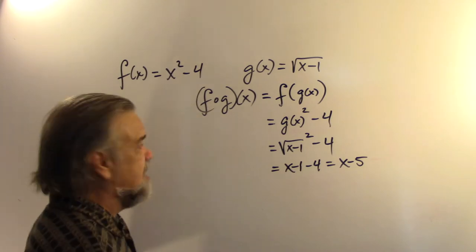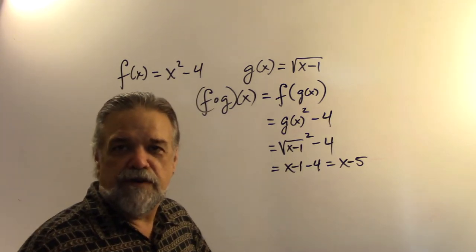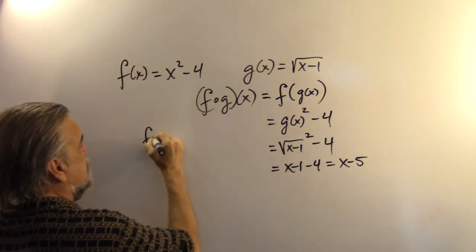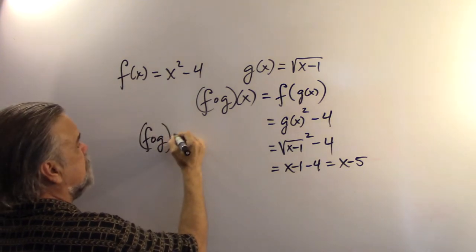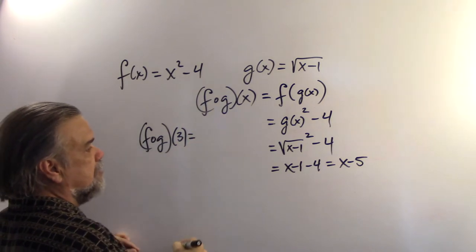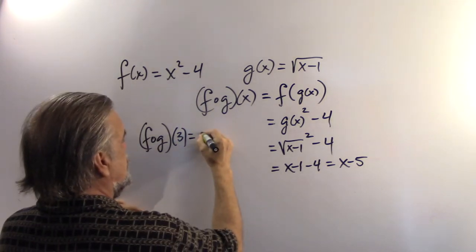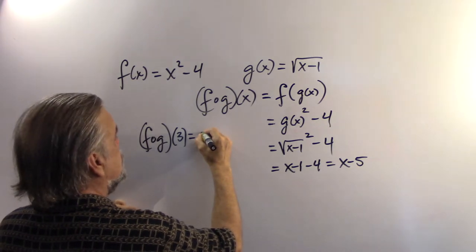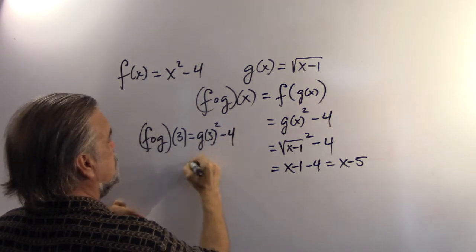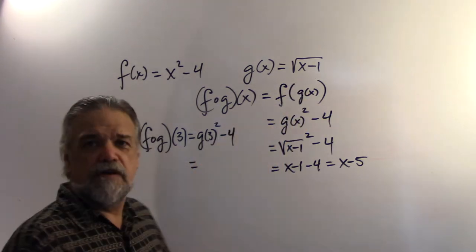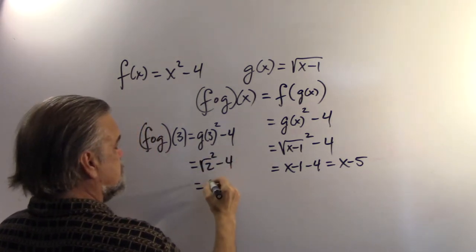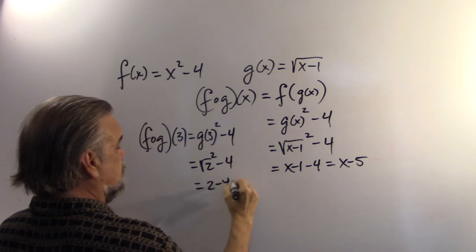Well, let's see. Let's plug in some values. Let's evaluate the function for different values of x. Let's say f of g of 3. Well, that's going to be g of 3 squared minus 4. And g of 3 is square root of 3 minus 1. It's going to be the square root of 2 squared minus 4. And that equals 2 minus 4, which is negative 2.